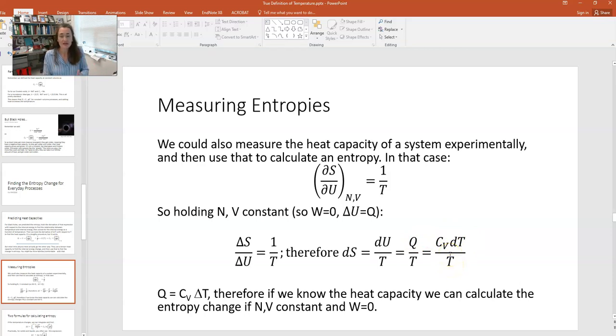So if we know the heat capacity, which we do for Einstein solids and ideal gases for example, we know those values. If we know that heat capacity, then we can use that to calculate an entropy change. So that's what we're going to do.